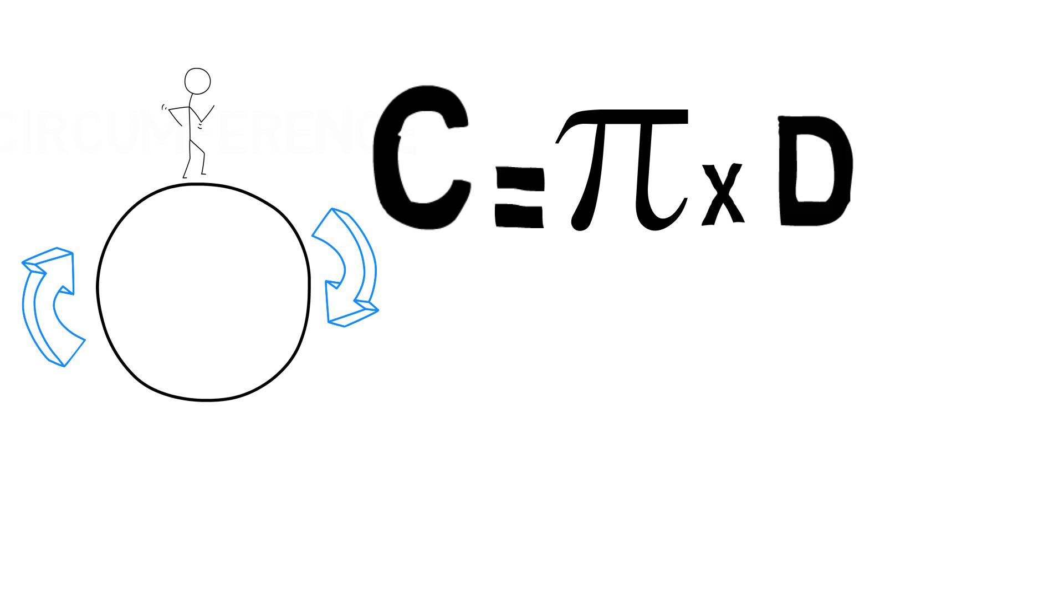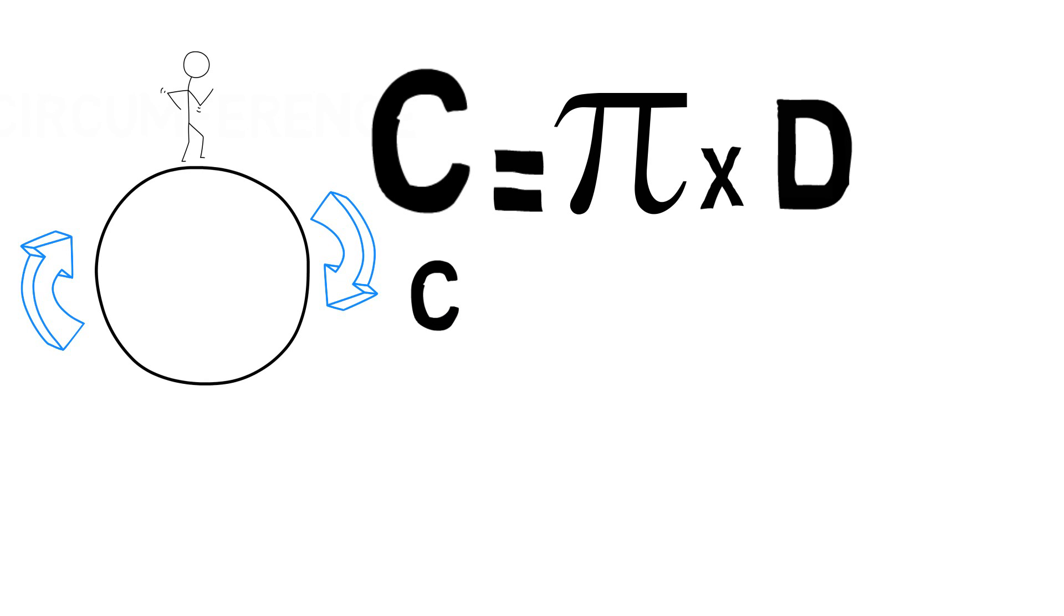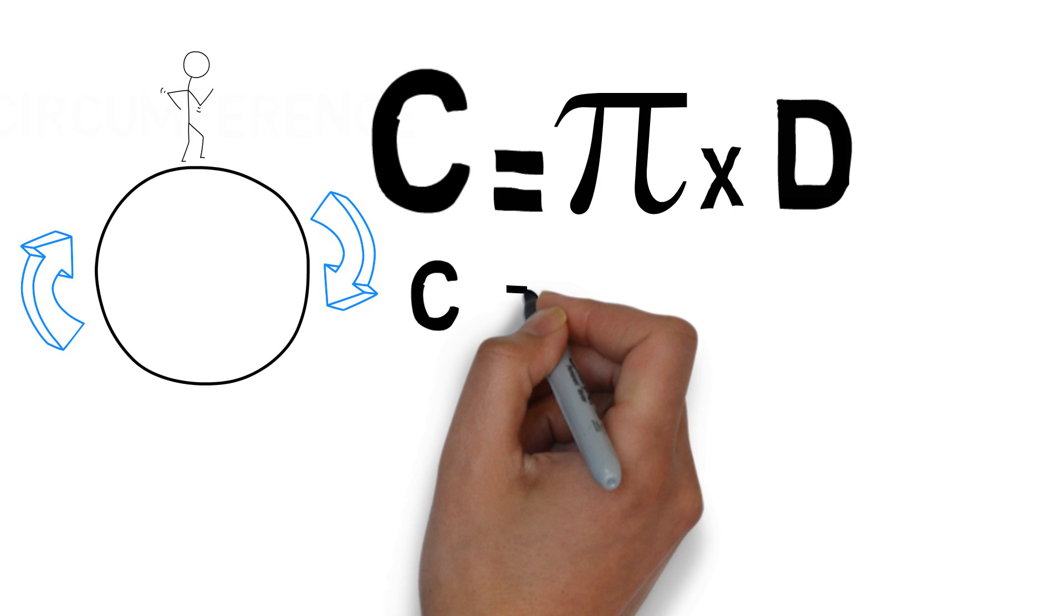So let's come up with our first problem. A circle has a diameter of 10 centimeters. What is its circumference? Time for our shiny new formula. C is equal to pi times D.